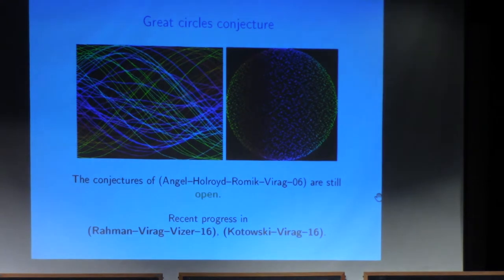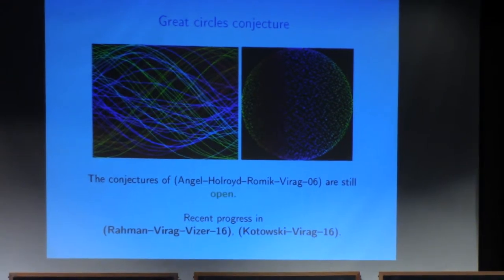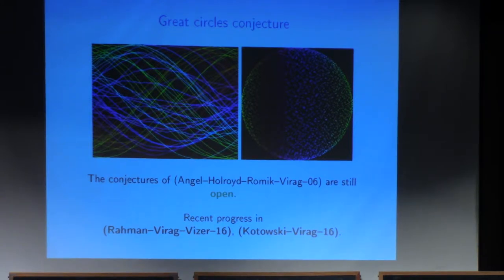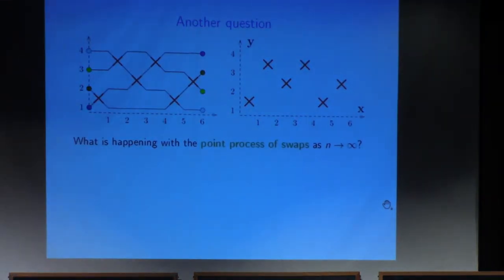These two conjectures are still open. There is a more general conjecture related to the geometry of an object called the permutahedron, which would imply these conjectures — but that conjecture is also open. There was some recent progress on a related but different model of so-called lazy sorting networks, but in this original setup, nobody knows how to prove something of this sort.